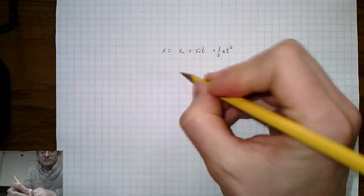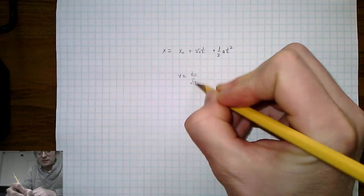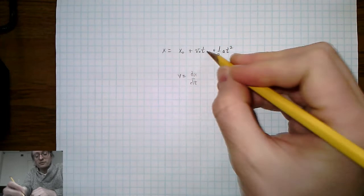the definition of velocity, if you recall, is dx/dt, or the first derivative of position with respect to time. So let's perform this derivative on that equation.